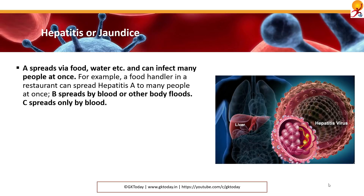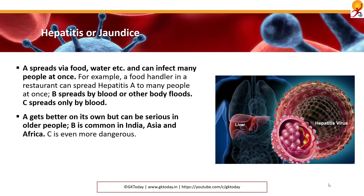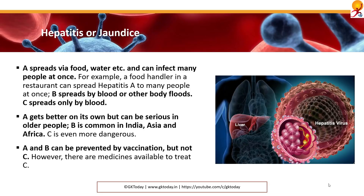For example, if a food handler in a restaurant has hepatitis A, it can spread to many people. B only spreads by blood or other bodily fluids. C spreads only by blood. A usually gets better on its own but can be serious in older people. B is pretty common in India, Asia and Africa. C is a lot more dangerous. A and B can be prevented by vaccination, but not C — however, there are medicines available to treat C.